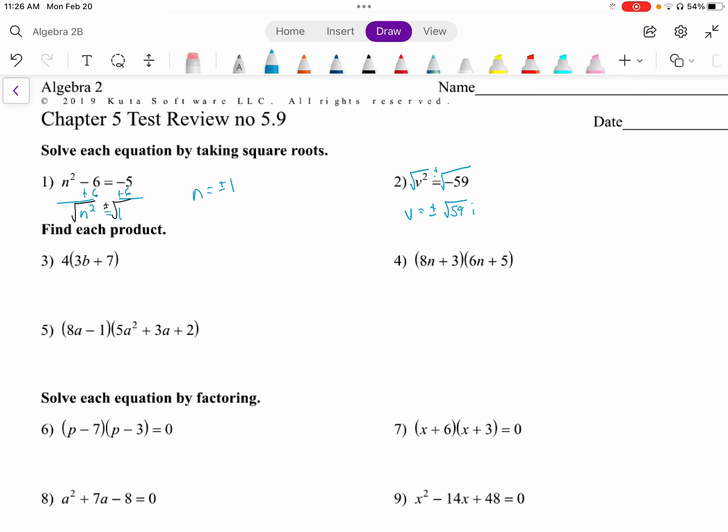3 through 5 is multiplying. So here we just distribute. It's 12b plus 28. Number 4, we also distribute. We do have a way to remember it. We use the FOIL acronym, and we multiply first. So that is 48n squared plus 40n plus 18n. And finally, 3 times 5. Our last is 15. And then we look for like terms. These have just n to the first, so we can add those. We have 48n squared plus 58n plus 15.